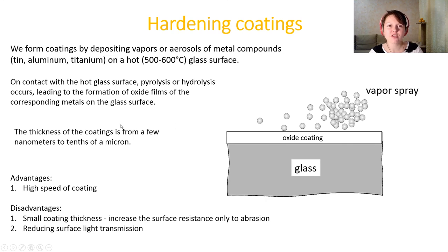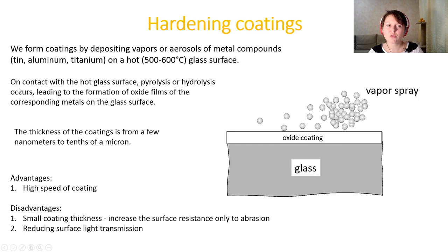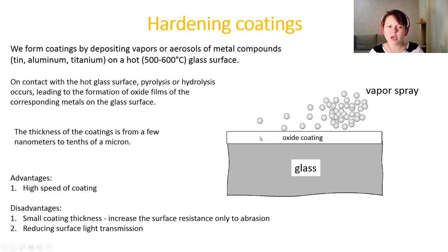The next surface hardening method is the use of hardening coatings — either inorganic or organic. For inorganic coatings, we form the coating by depositing vapors or aerosols of metal compounds based on tin, aluminum, or titanium onto a very hot glass surface. On contact with the hot glass surface, pyrolysis or hydrolysis occurs, leading to formation of oxide films of the corresponding metals on the glass surface. The coating thickness ranges from a few nanometers to tenths of a micron. The main advantage is high coating speed; the disadvantage is that the coating is very thin and may disappear under mechanical impact.